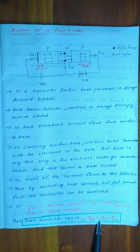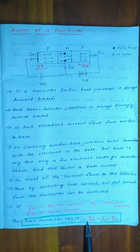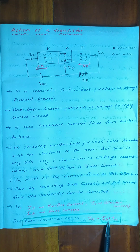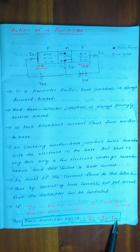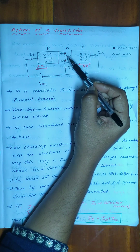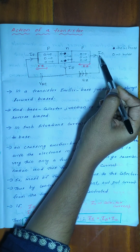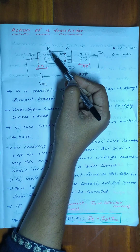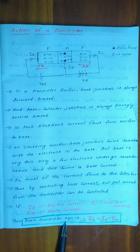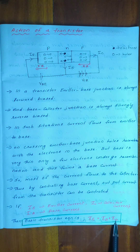The emitter current IE is equal to the sum of base current IB plus collector current IC. That is: IE = IB + IC.